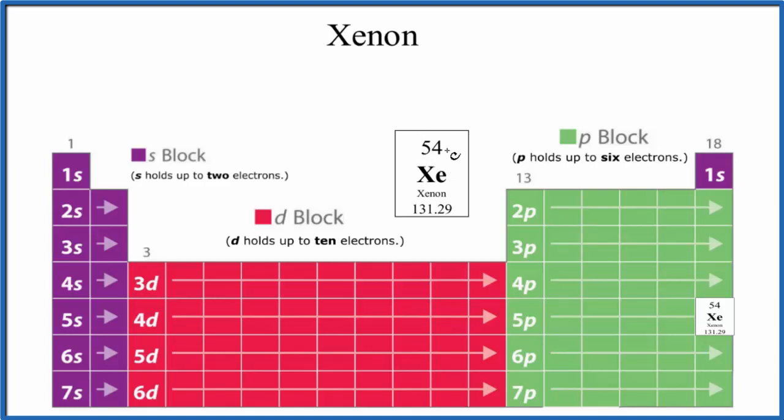So in a neutral atom, the atomic number equals the number of protons, and it equals the number of electrons. So we have 54 electrons that we use to write the electron configuration for Xe.